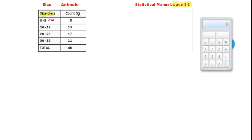What we have here in the first part of the table is a column which has the size classes for the animals. The first is 0 to 9 centimeters, next is 10 to 19 centimeters, and so on. Then secondly, a count of the number of animals in that particular size class. There were five in the first size class, 13 animals were 10 to 19 centimeters, and so on.